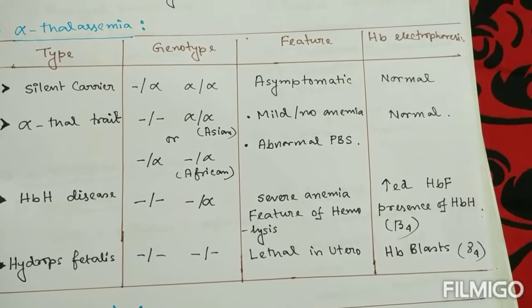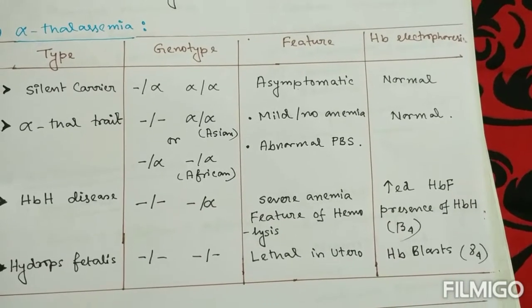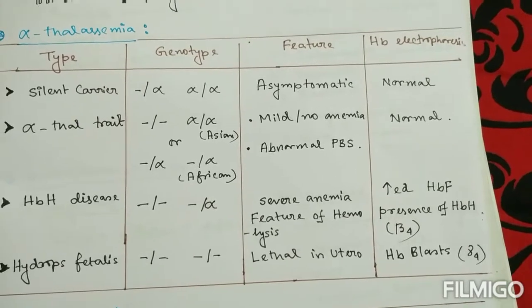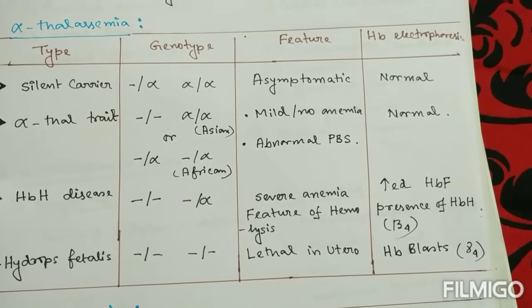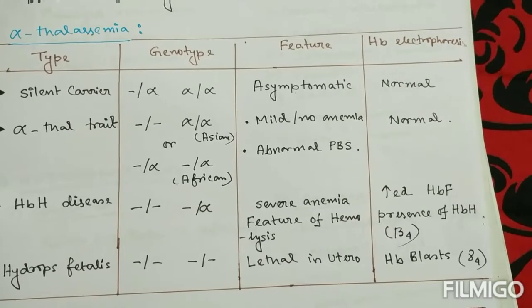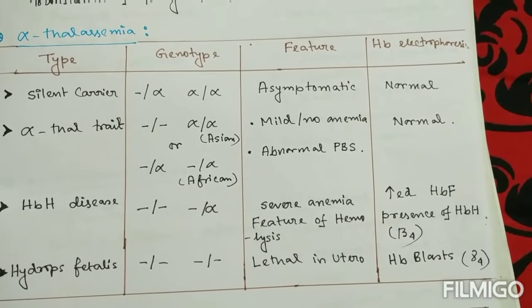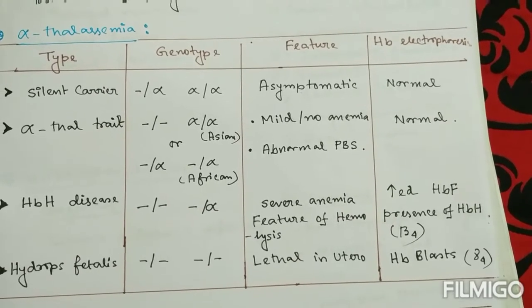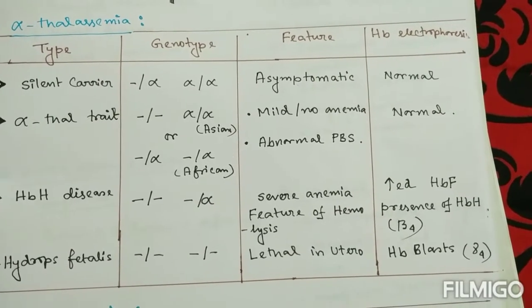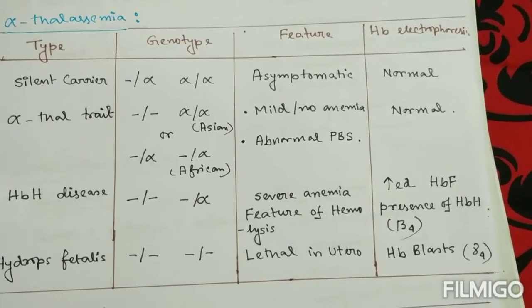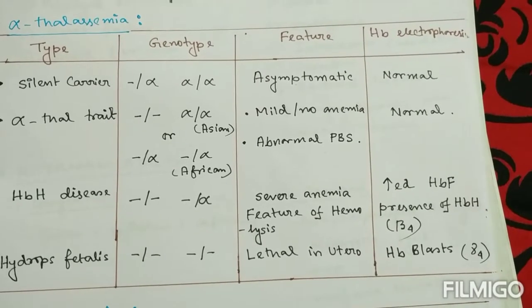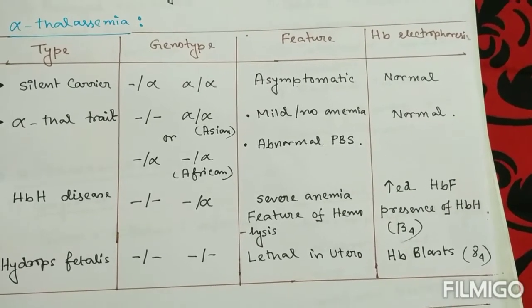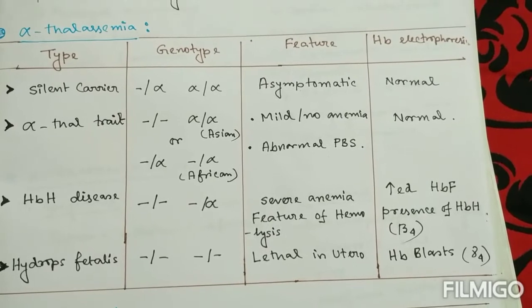In HbH disease, three alleles are absent, so the features are quite severe — severe anemia and features of hemolysis are found. In hemoglobin electrophoresis, there is an increased amount of HbH (beta-4 tetramers).